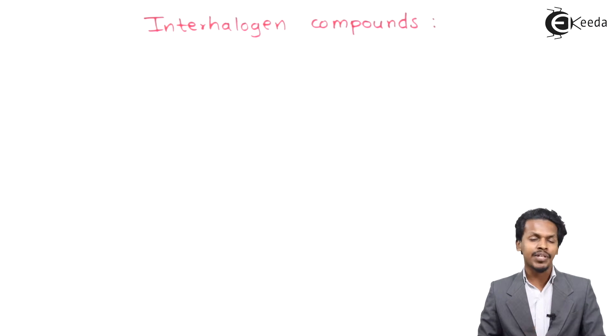So friends, let me talk about interhalogen compounds. These are the compounds in which there are two or more different halogen atoms associated in the molecule. That is what is basically known as interhalogen compounds.